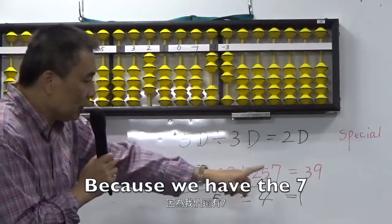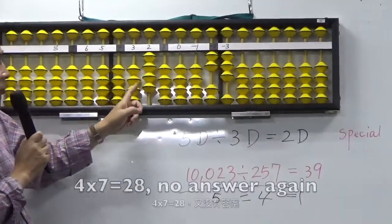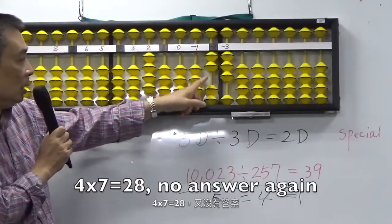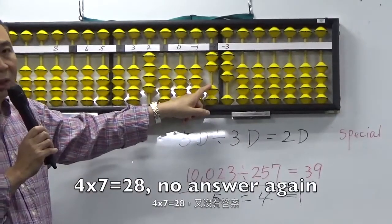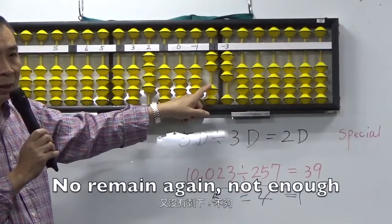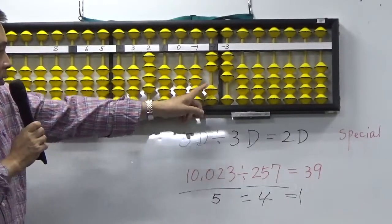But the answer is not finished. Because we have a 7. 4, 7, 4, 7, 28. No answer, again. No remainder, again. Not enough.